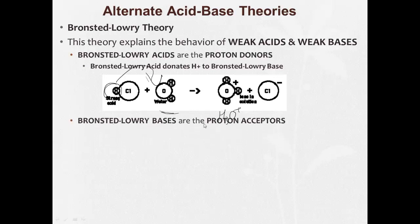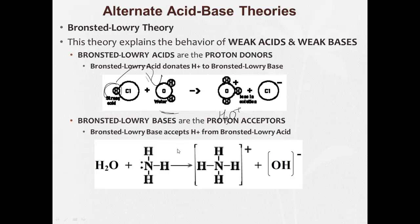Bronsted-Lowry bases are proton acceptors. The Bronsted-Lowry base accepts the H plus from the Bronsted-Lowry acid. So here is our NH3. The water is amphoteric. It'll give up an H plus. And then this H plus comes here and hangs out with the NH3. And now we end up with NH4 plus and OH minus. So this accepted a proton, an H plus.